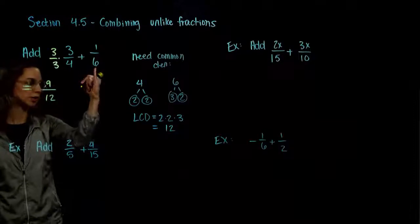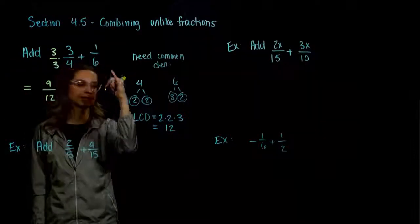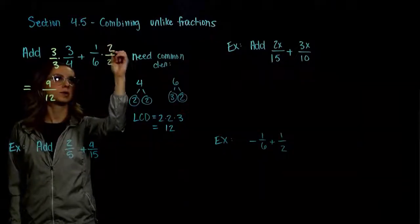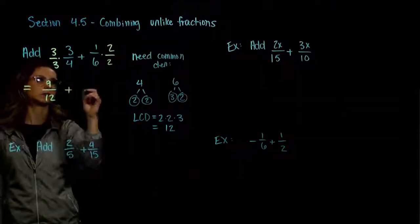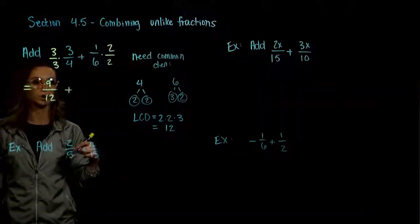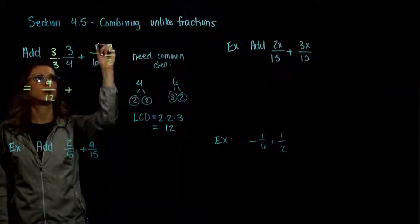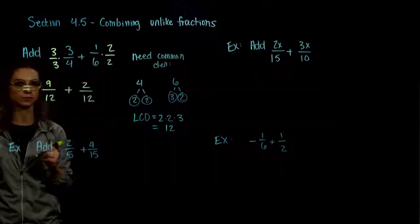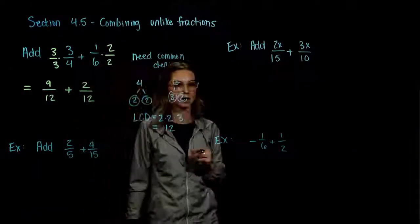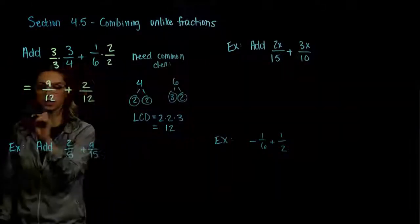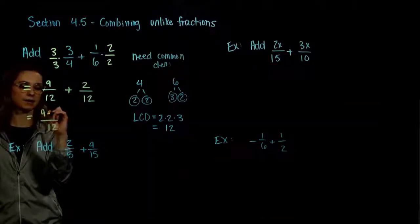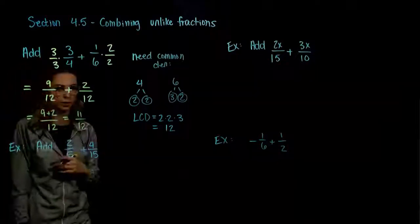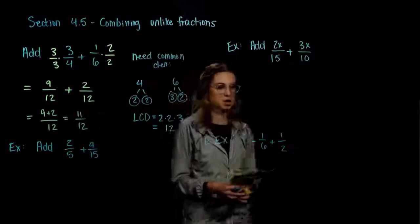We're going to do the same thing for 1 sixth. To turn 6 into 12, what do we have to multiply by? 2. Whatever we do to the bottom, we have to do to the top. So the equivalent fraction of 1 sixth becomes 1 times 2 gives us 2, and 6 times 2 gives us 12. Now that we have common denominators, keep the same denominator and add across the top. 9 and 2 together gives us 11, and 11 twelfths does not reduce, so we're done.